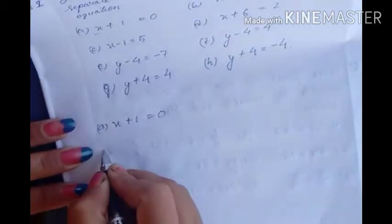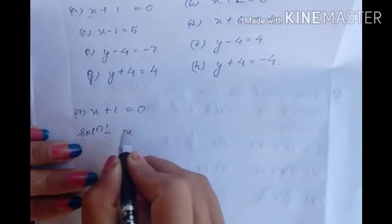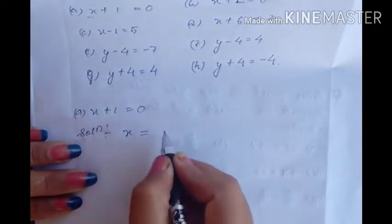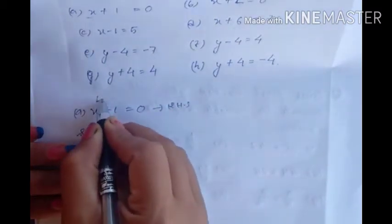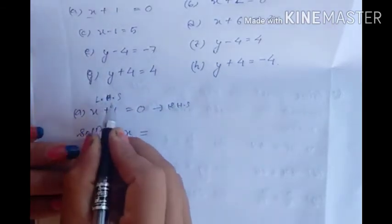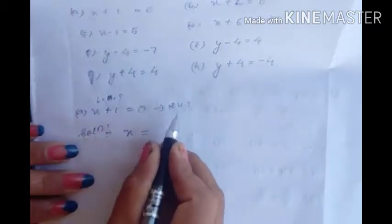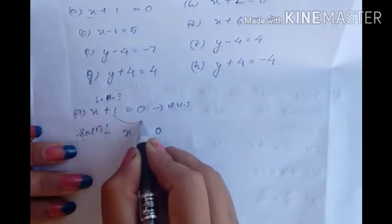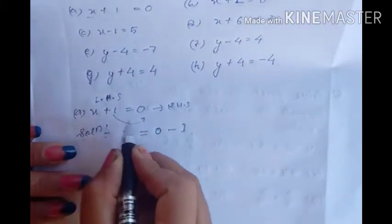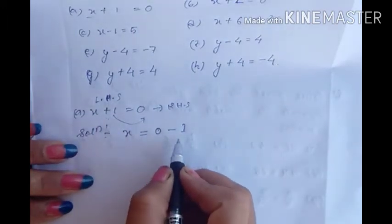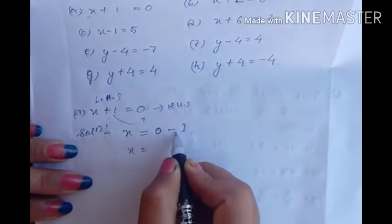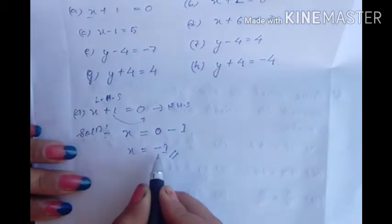For A: x plus 1 equal to 0. We have to separate the variable from the constant. I will transfer this 1 to the right hand side. On the right hand side it is 0, and this 1 will become minus 1, because when you transfer any value from left to right, plus becomes minus and minus becomes plus. So x equals 0 minus 1, which is minus 1.